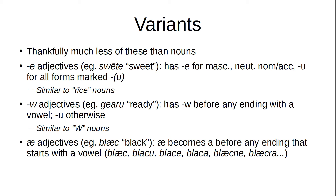And the a-adjectives, such as black, which means, well, black. In these, a becomes a before any ending that starts with a vowel. There's something similar that happens with some nouns like dai, dogos, but it's a bit more complicated in nouns, which is why I didn't draw a direct parallel. In adjectives it's pretty simple: if the ending starts with a vowel, the a turns into an a. So: black, bláku, bláke, bláka, blákne, blákra.